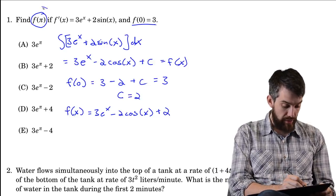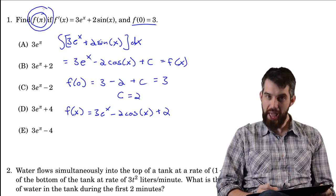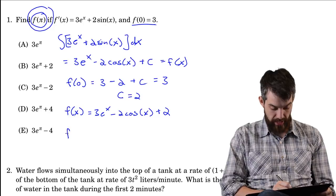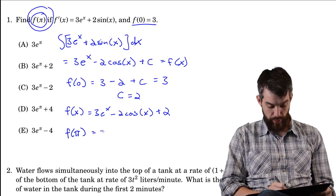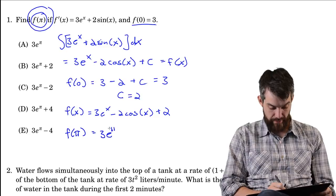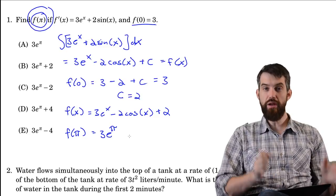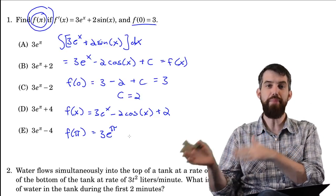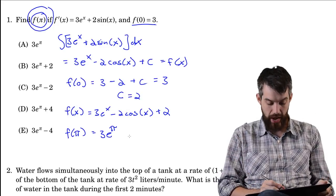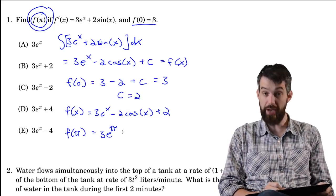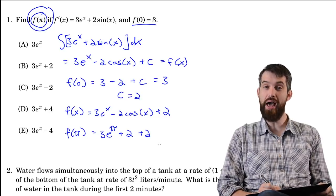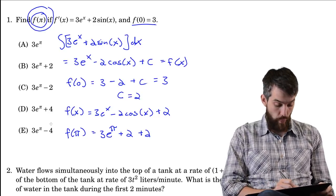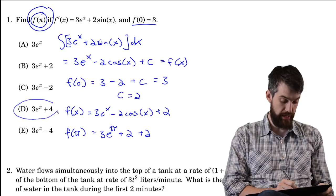Now I need to find f of π by plugging π in. So f of π is 3e to the π. Then cosine of π is minus 1, and I already have a minus sign, so the minus becomes a plus. That gives plus 2 times 1, then plus 2, so it looks like 3e to the π plus 4. That's option D.